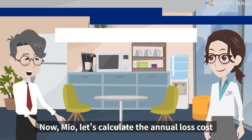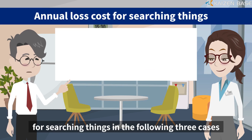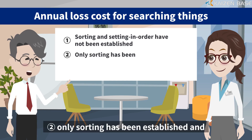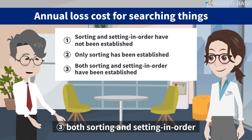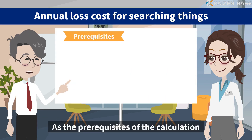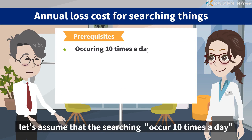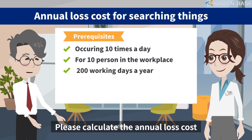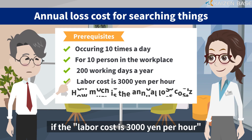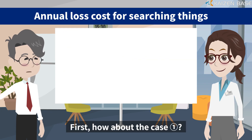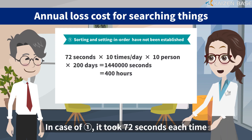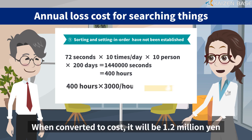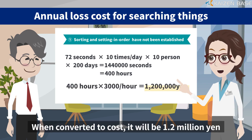Now let's calculate the annual loss cost for searching things in the following three cases: sorting and setting in order have not been established; only sorting has been established; and both sorting and setting in order have been established. As prerequisites, let's assume that searching occurred 10 times a day, for 10 persons in the workplace, and 200 working days a year. The labor cost is 3,000 yen per hour. In case one, it took 72 seconds each time, so it will take 400 hours a year. When converted to cost, it will be 1.2 million yen.